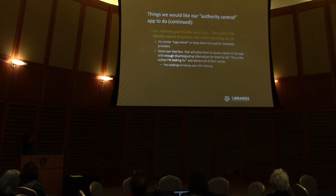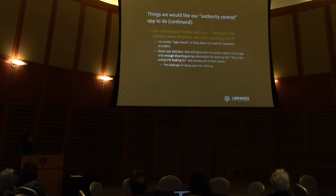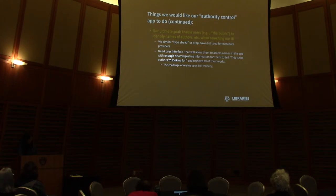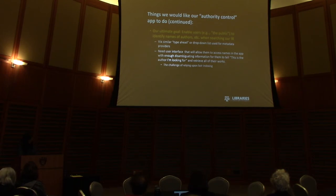Our ultimate goal is to help users make it easier to identify the authors they're looking for and get all that person's works. Ideally we'd also like a similar type-ahead or drop-down in a unifying discovery interface that would search all our repositories. This might be more complicated than we think because our DAME relies on Solr indexing. This is way down the line since we're still getting a discovery interface, but one possibility is to attach a piece of disambiguating information at the end of a name string and index that as a text string in Solr.